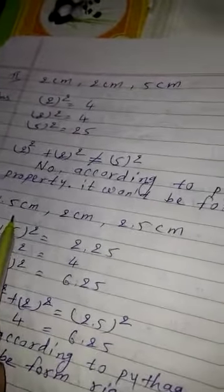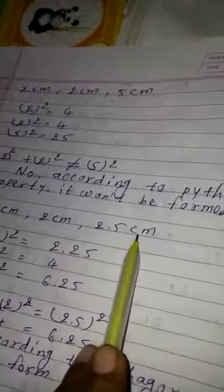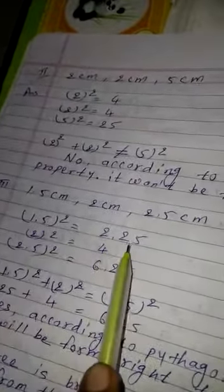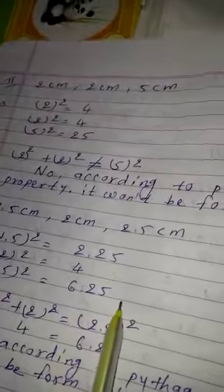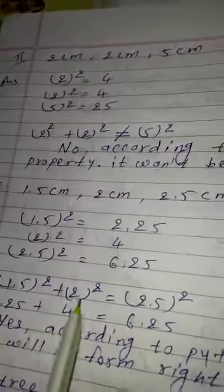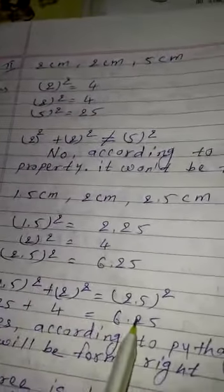The third question is 1.5 cm, 2 cm, 2.5 cm. The square of 1.5 is 2.25, square of 2 is 4, square of 2.5 is 6.25. Do addition, we will get the answer 2.25 plus 4 is equal to 6.25. So yes, according to Pythagoras theorem, right triangle is possible.